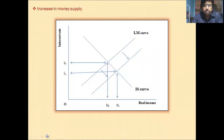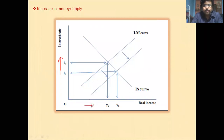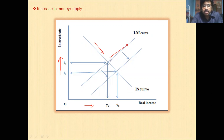This is the diagrammatic representation of the increase in money supply on the IS-LM framework. Along the vertical axis we measure the interest rate, and along the horizontal axis we measure the real income. This is the initial IS curve and this is the initial LM curve. This is the equilibrium point where the money market as well as the goods market are in equilibrium.